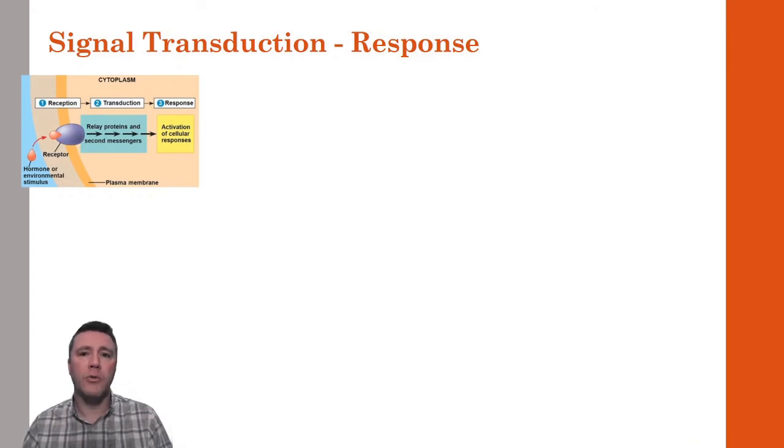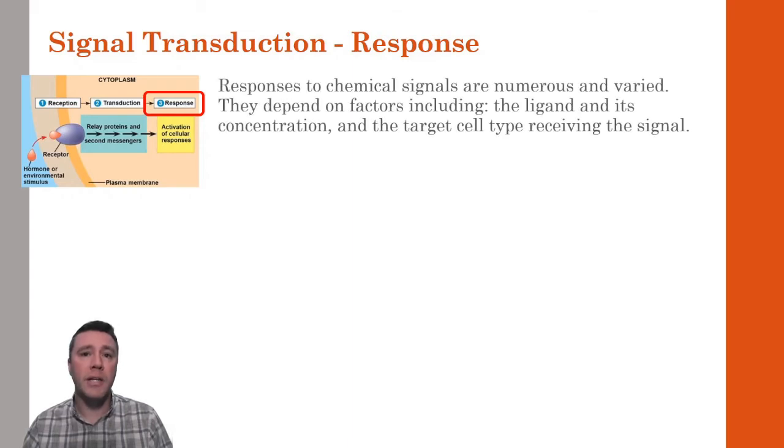The final stage of signal transduction is the cellular response. Responses are varied and numerous and depend on what the ligand is, the concentration of the ligand, and the type of target cell that's receiving the signal. For that reason, we will look at examples of types of responses rather than specific responses.